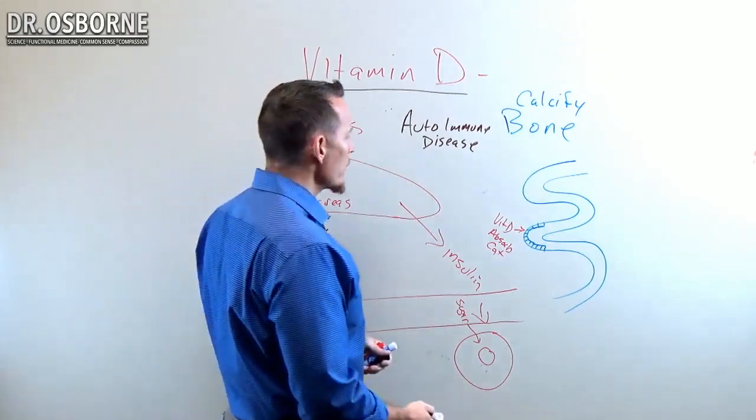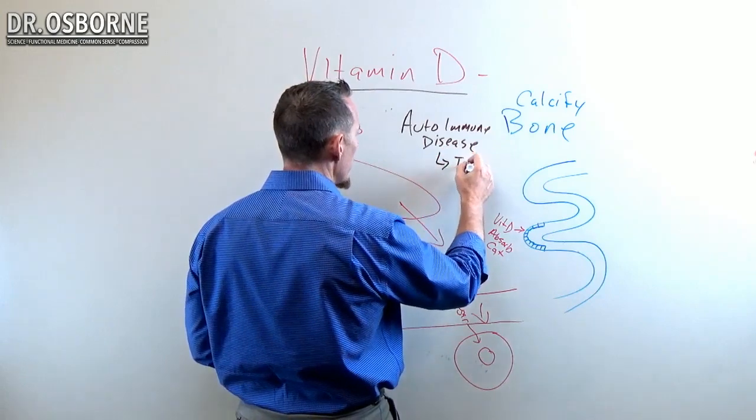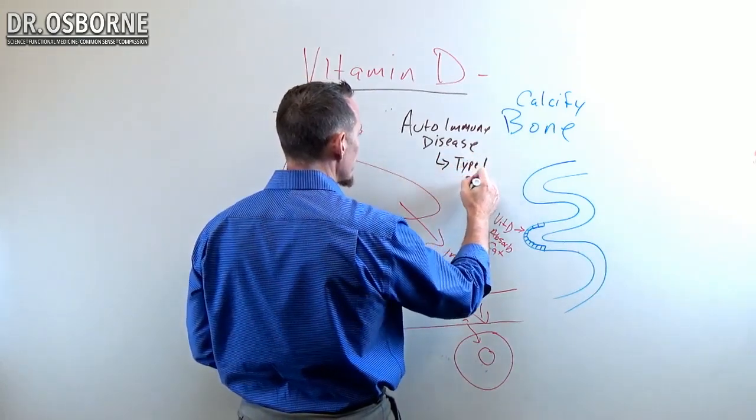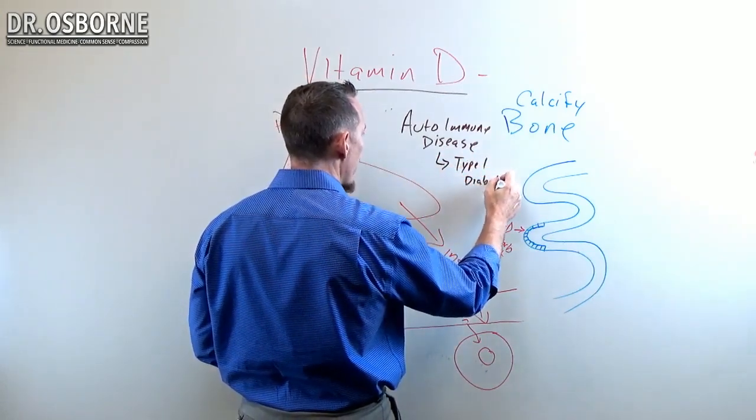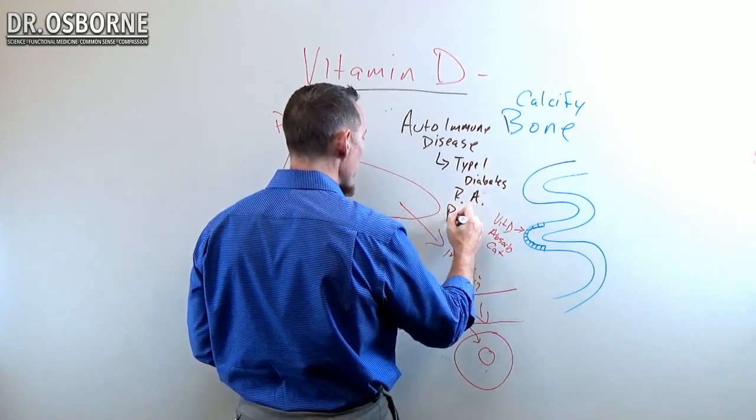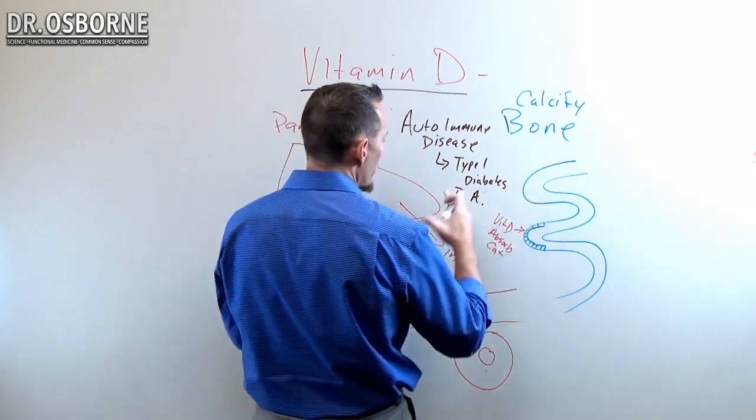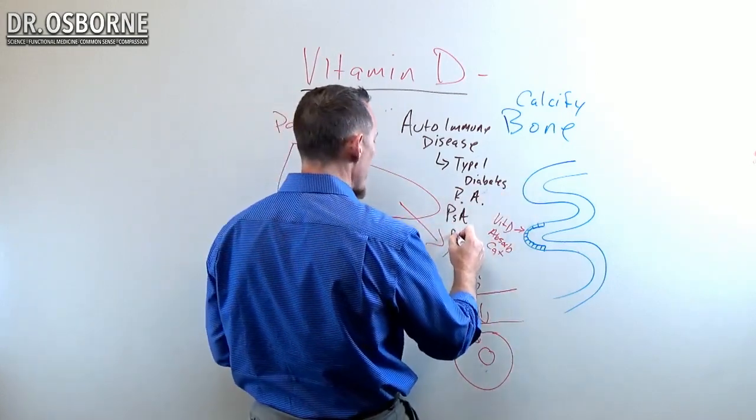There have been a number of research studies that have shown autoimmune diseases like type 1 diabetes, rheumatoid arthritis, psoriatic arthritis, and psoriasis, which both of those two fall in the same category.